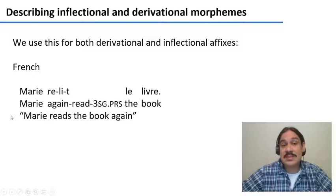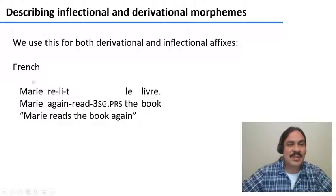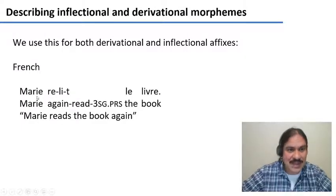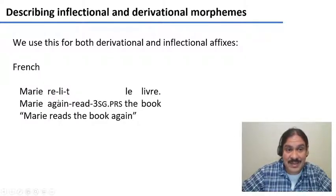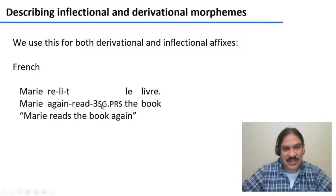By the way, this system can be used both for inflectional and derivational morphemes. This is an example from French: 'Marie relit le livre' — Marie reads the book again. In the word 'relit', you have a derivational prefix 're' meaning again, then the root 'li' meaning read, and then the 't', which is the conjugation for the third person singular — she — and the present tense.